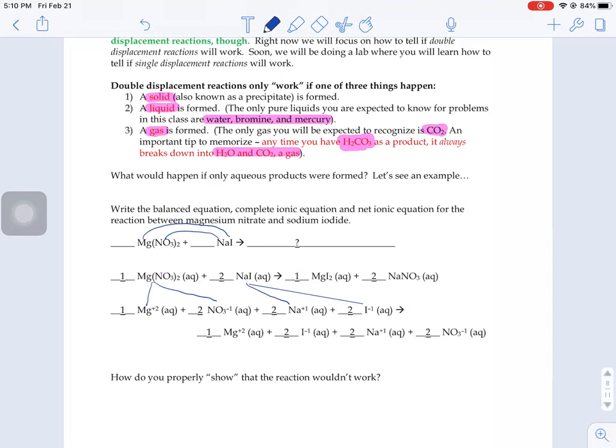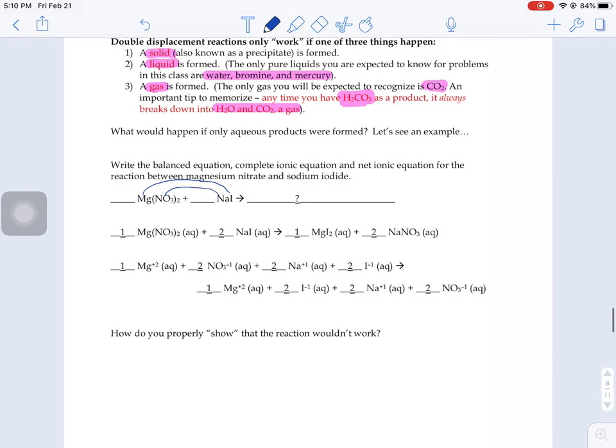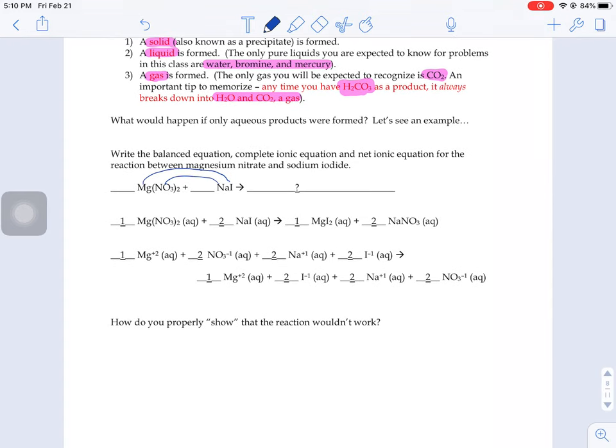Well, when we would go to take that complete ionic equation and turn it into a net ionic equation, we go to cancel out the spectators, the ions that are exactly the same on both sides of the reaction. So if you look at the magnesium on the left, it starts as a plus two aqueous ion and it ends as a plus two aqueous ion. So magnesium is a spectator, it gets canceled out. If you look on your nitrates, we have two nitrates on the left, aqueous, and then we have two nitrates on the right, aqueous, spectators. So they get canceled out.